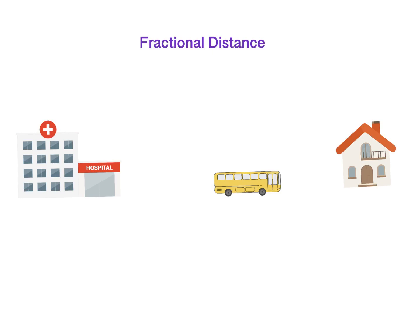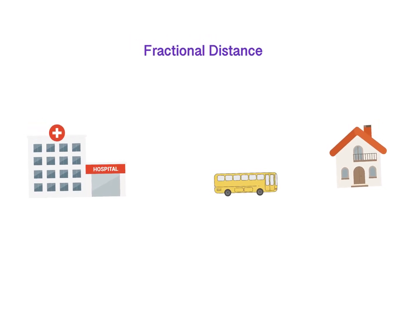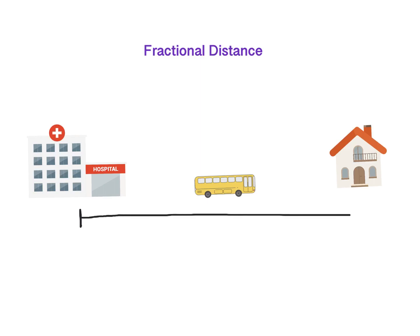Let's say that I'm describing the location of this bus stop. What I could tell you is that the bus stop is half of the distance from the hospital to the home. So if this is my full distance — going from the hospital all the way to the home — and the bus stop is half of the distance between the two, that makes sense because it looks like it's about halfway across that full length.